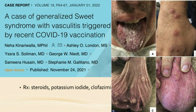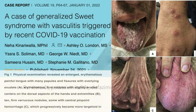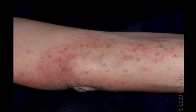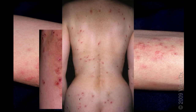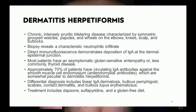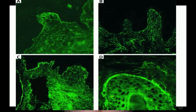There have been case reports of generalized Sweet syndrome following COVID-19 vaccines. Dermatitis herpetiformis presents with widespread, intensely pruritic pustules, typically on bony prominences. Biopsies show a characteristic neutrophilic infiltrate, positive direct immunofluorescence for IgA deposition at the dermal-epidermal junction, and granular deposits in the dermal papillae.